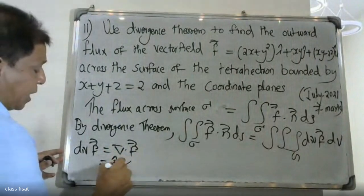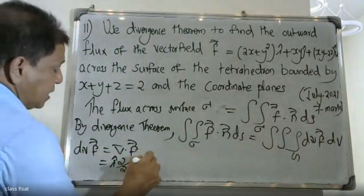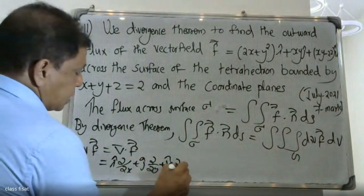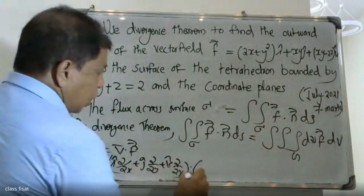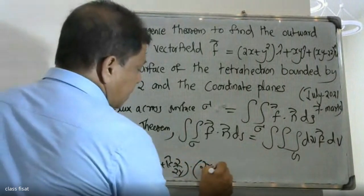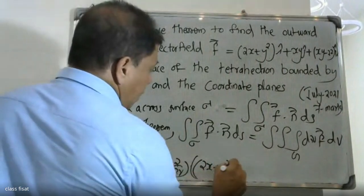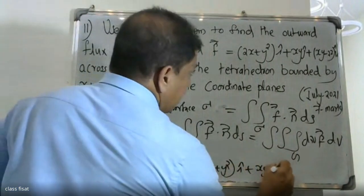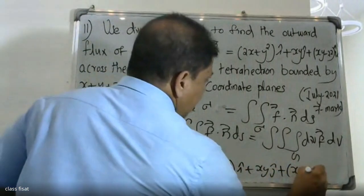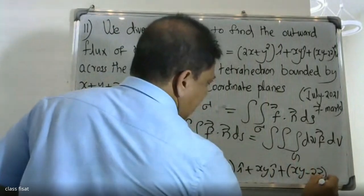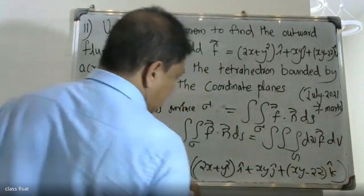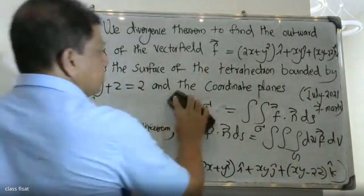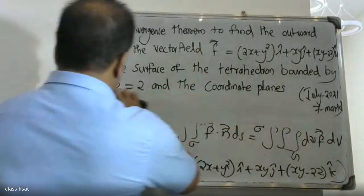We apply the divergence operator: del = i(d/dx) + j(d/dy) + k(d/dz), to F which equals (2x + y²)i plus (xy)j plus (xy - 2z)k.